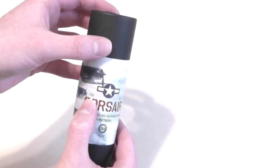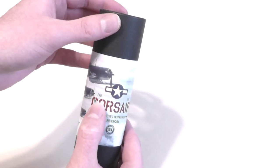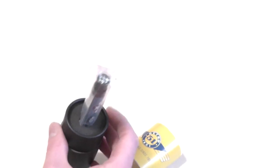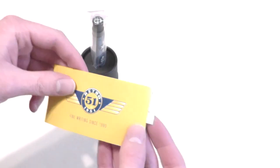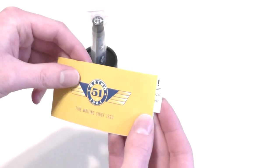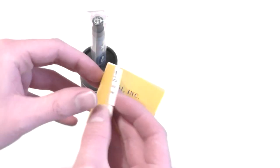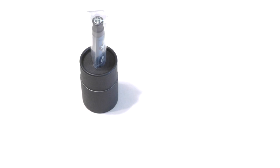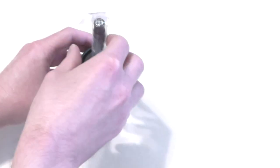It's the rollerball of the Corsair F4U. Let's take it out. It's the inside of the packaging. Let's see what this says. Fine writing since 1990. That's just some information about Retro 51. Let's take a look at this pen.